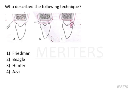Let us look into the detail of the figure or the illustration shown here. If you see in A, you will appreciate that this particular area is devoid of soft tissue — that means the interdental papilla is missing. There is loss of interdental papilla in this case.